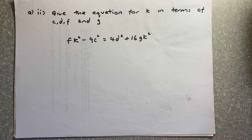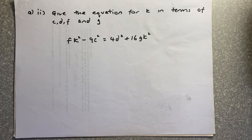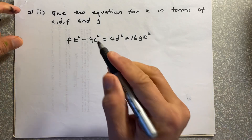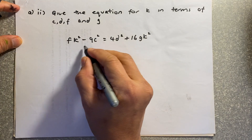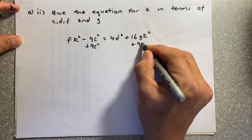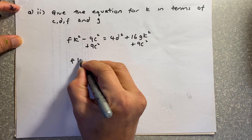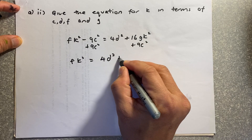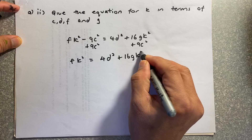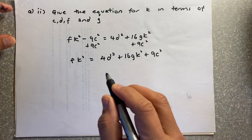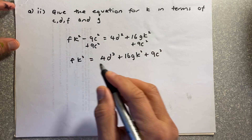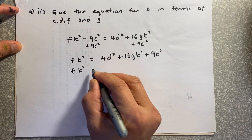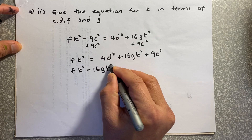The next part is a merit or possibly excellence question: make k the subject of formula. Add 9c² to both sides so that the −9c² cancels, giving 4d² + 16gk² + 9c² on the right. Then move the 16gk² term: subtract 16gk² from both sides, so fk² − 16gk² = 4d² + 9c².